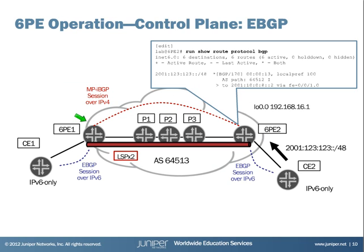So let's see how 6PE actually works. The CE routers can be dual-stack or IPv6-only. As you can see, the CE routers are running a routing protocol to exchange IPv6 routes — here it is eBGP over IPv6. The 6PE2 router learns this IPv6 route from CE2 and installs it in its inet.6.0 table. Remember, there is no VRF configuration here.